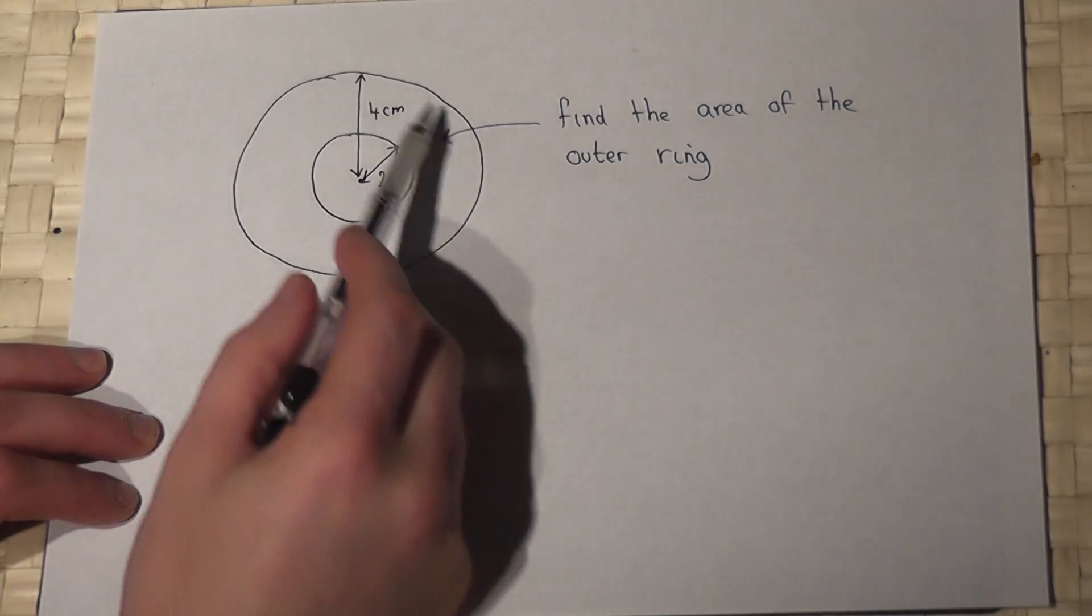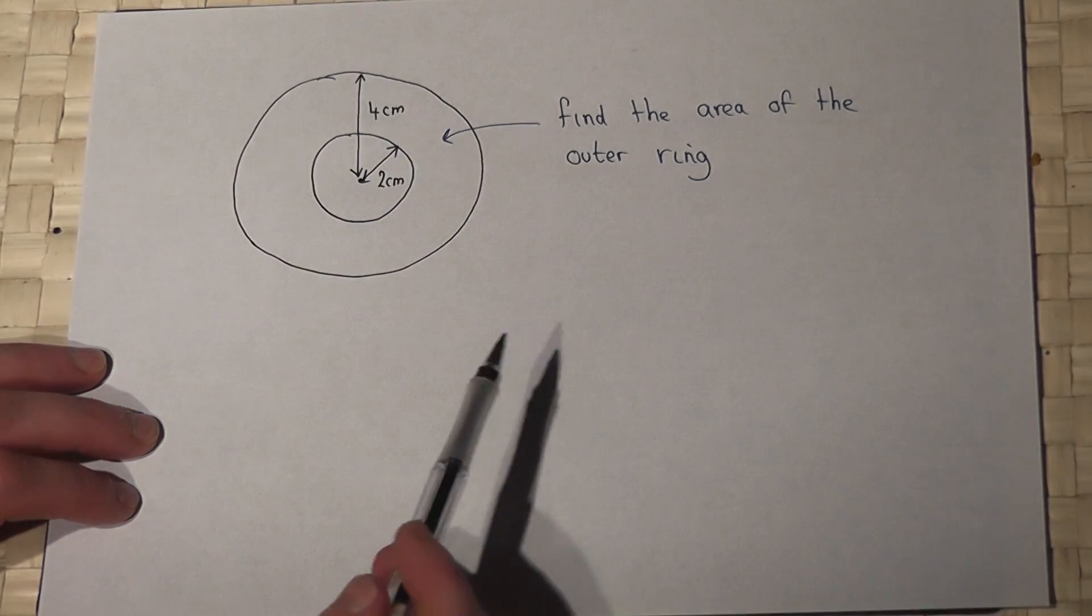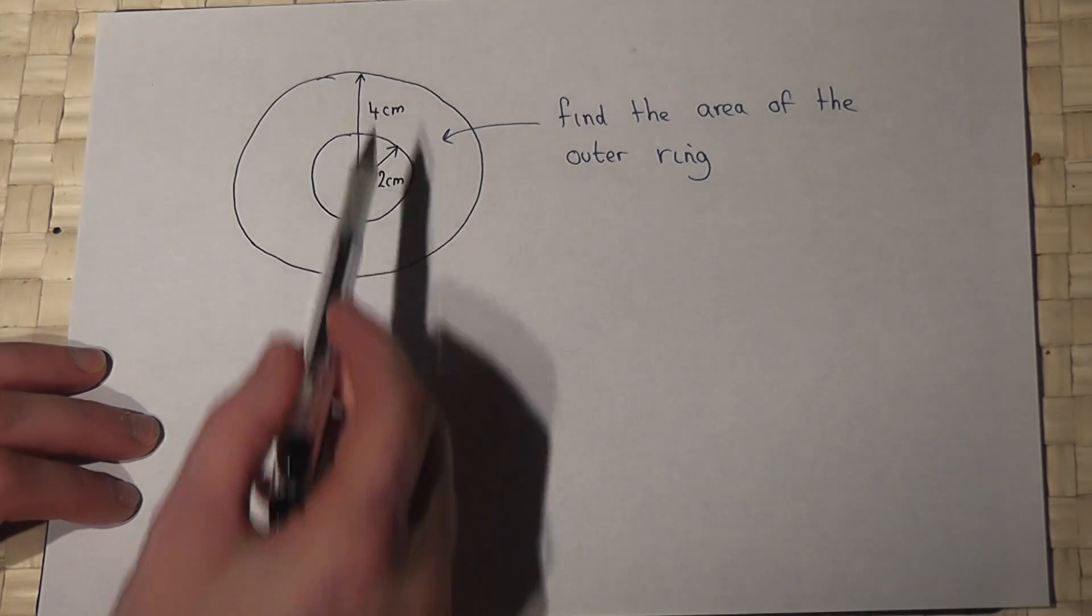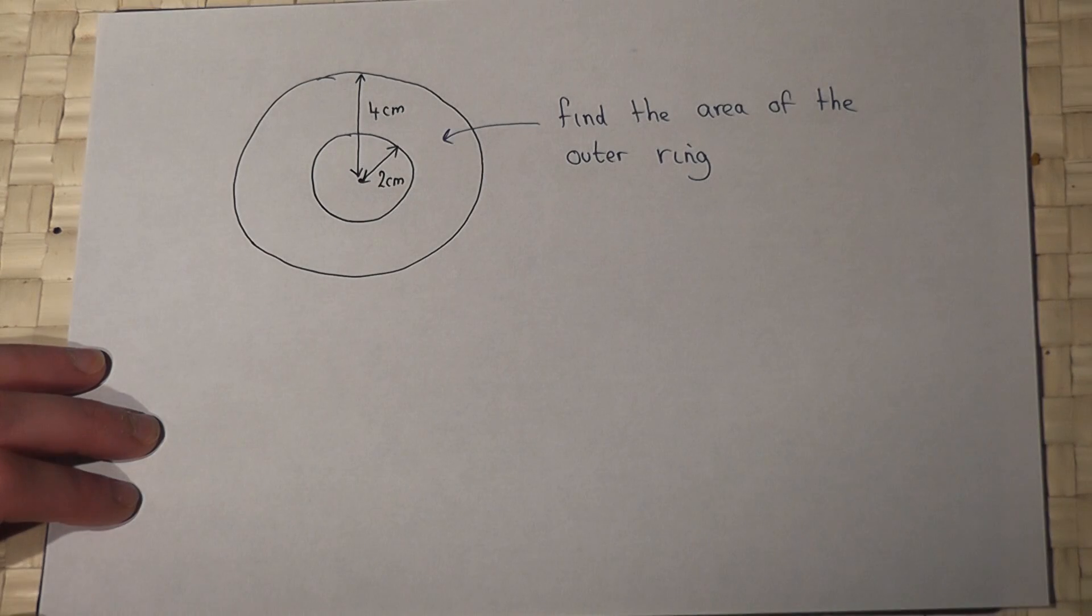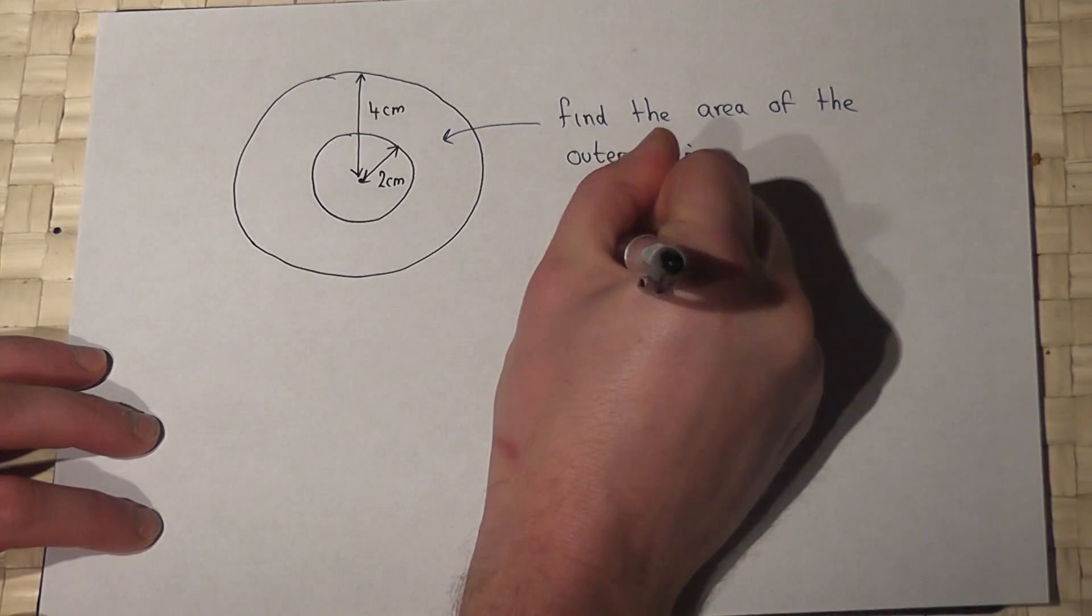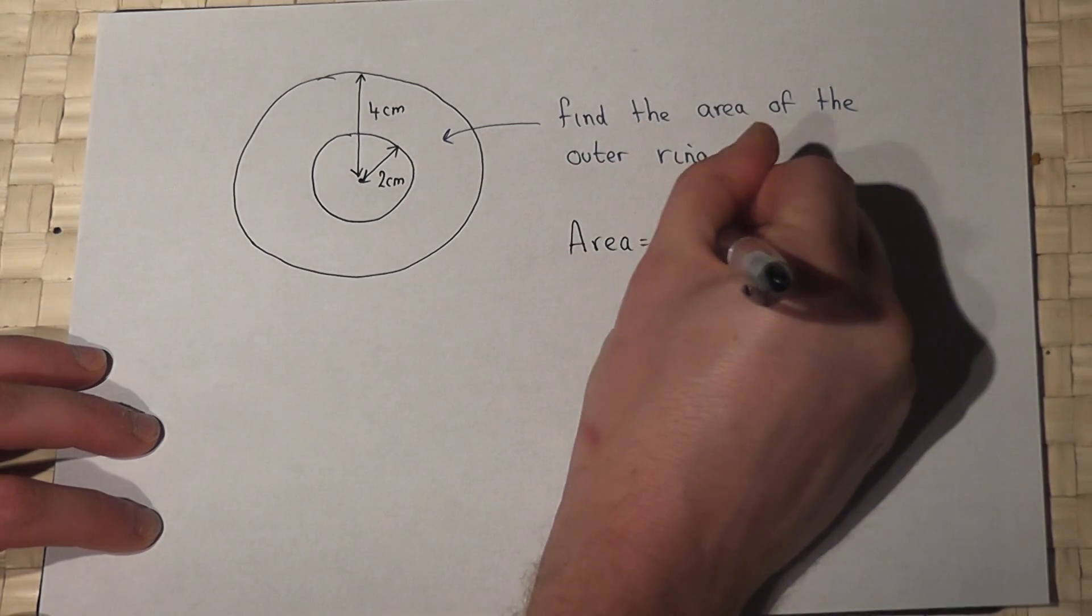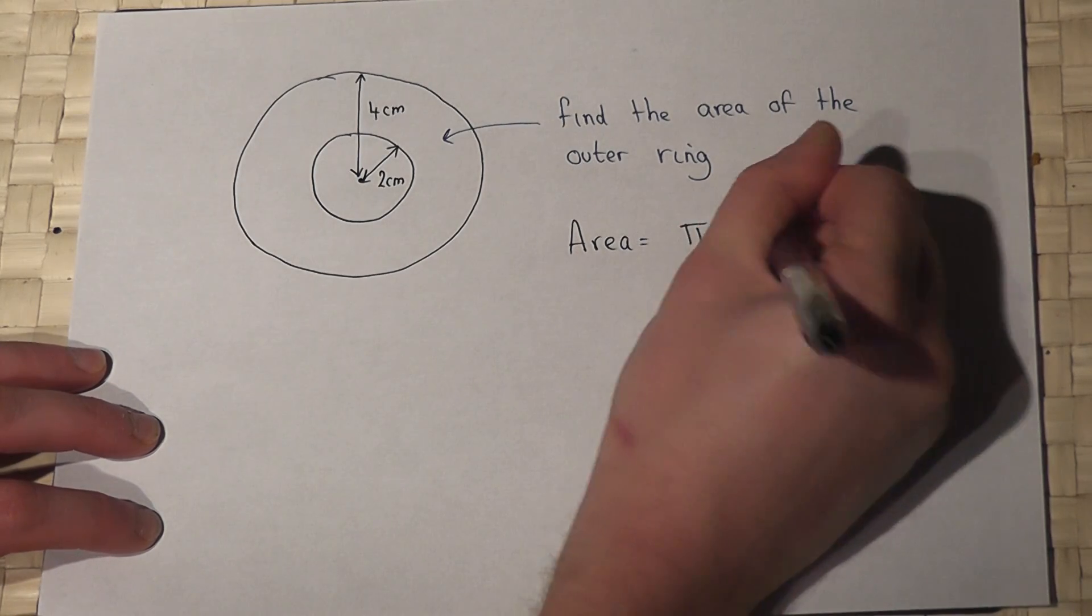In this problem we've got two circles and we're asked to find the area of this outer ring here. Now we know that the area of a circle is pi times the radius squared.